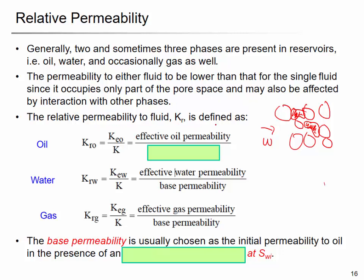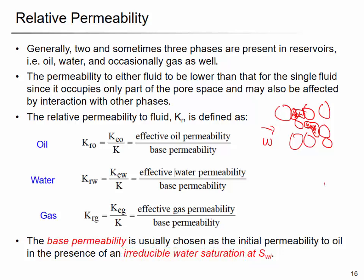Relative permeability to a fluid is defined as the effective permeability of that fluid over the base permeability. You may have oil relative permeability, water relative permeability, and gas relative permeability. The baseline permeability is usually chosen as the initial permeability to oil in the presence of irreducible water saturation — the residual water saturation.